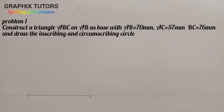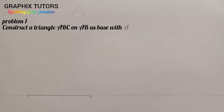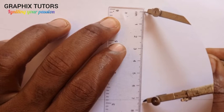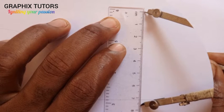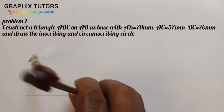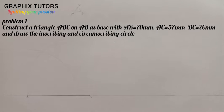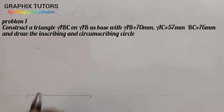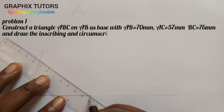The next measurement is BC = 76mm. I'll take my metal rule, measure 76mm — 75, and then 76. Since it says BC, I'm starting from B, and C will be anywhere along this arc. Where the two arcs intersect, that will be my point C. Then I'll connect A to C and B to C.